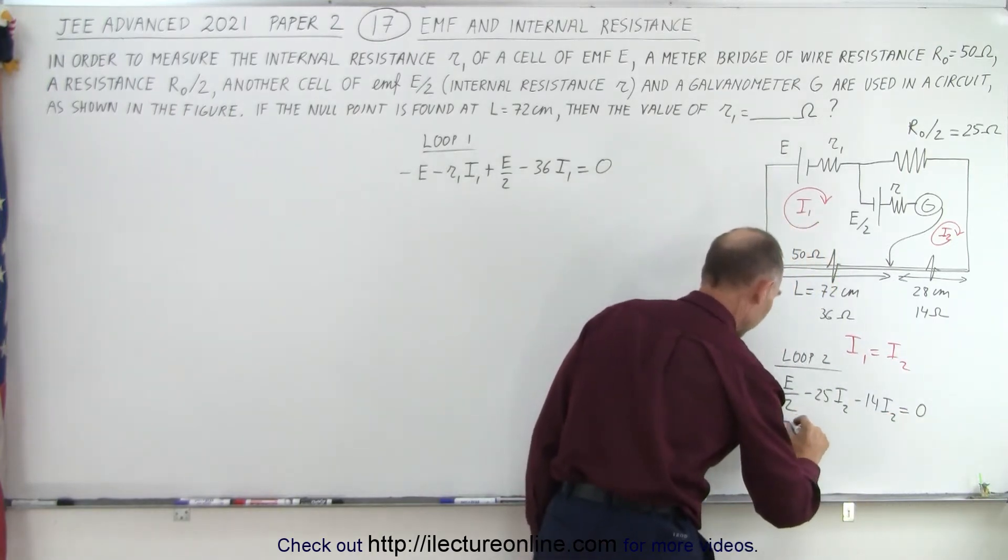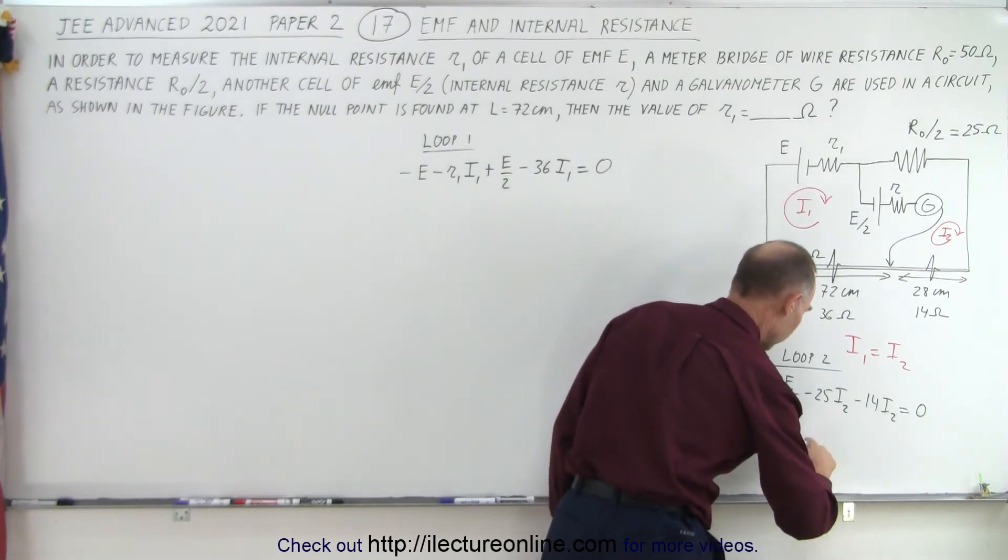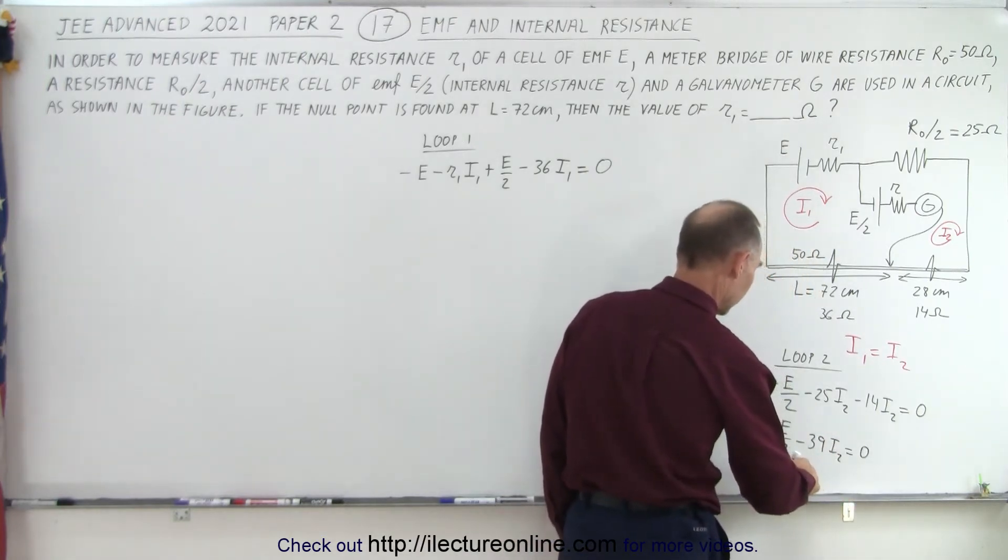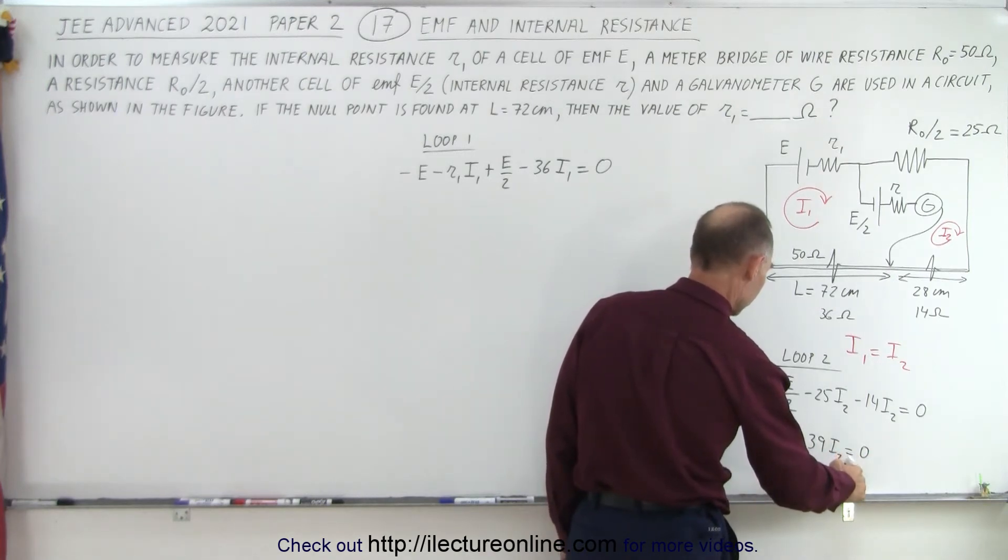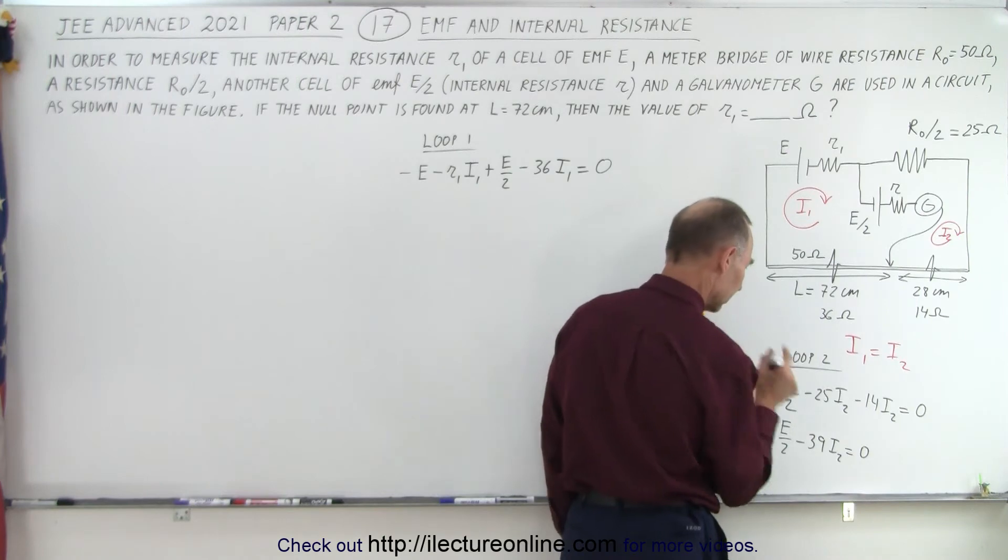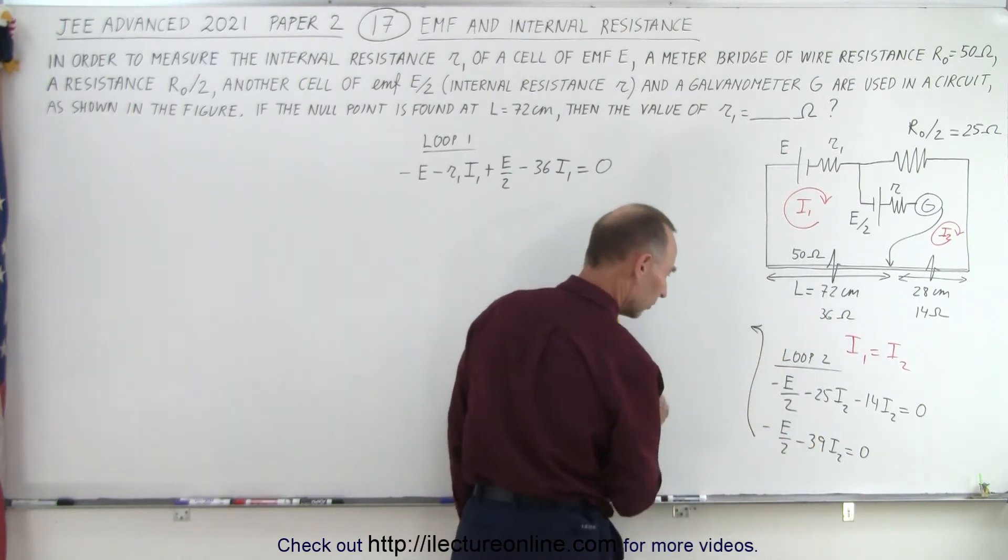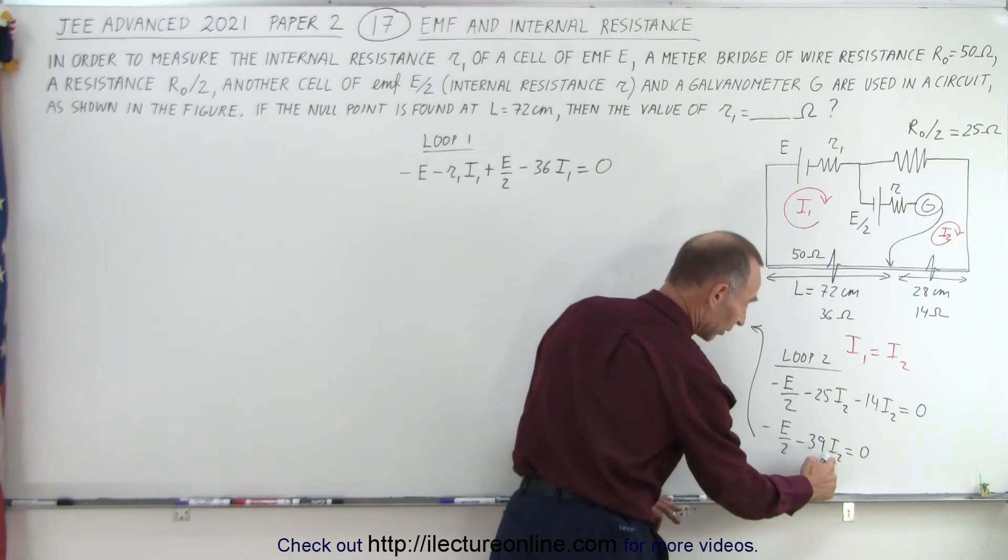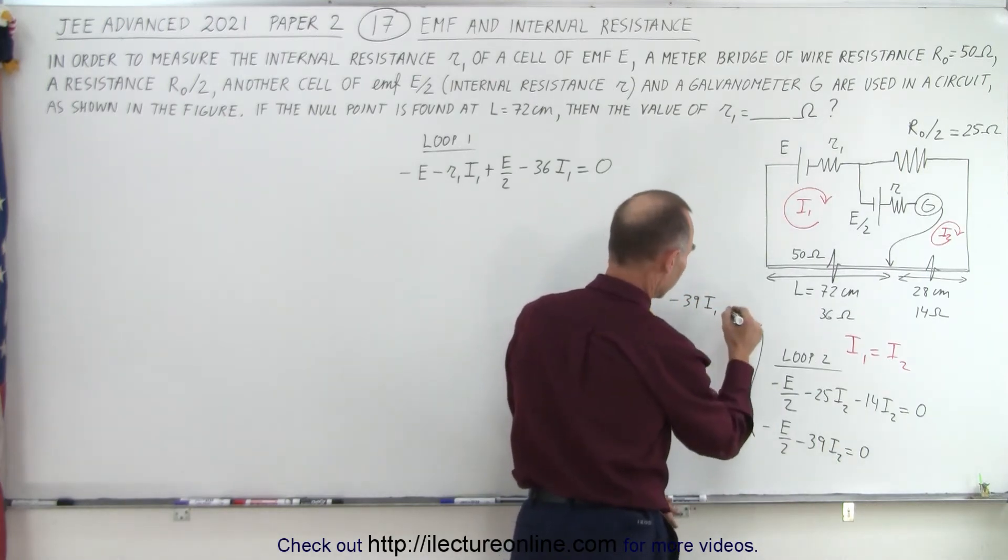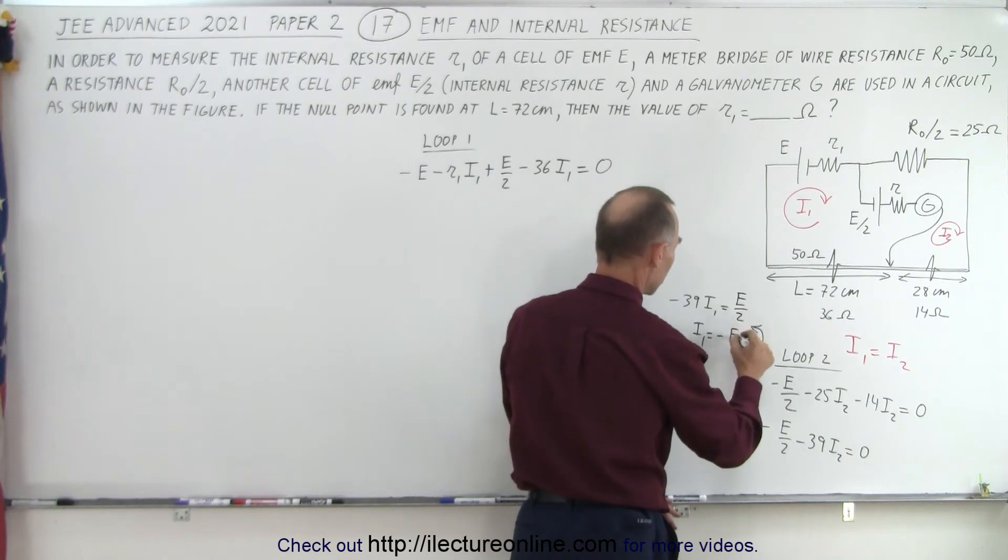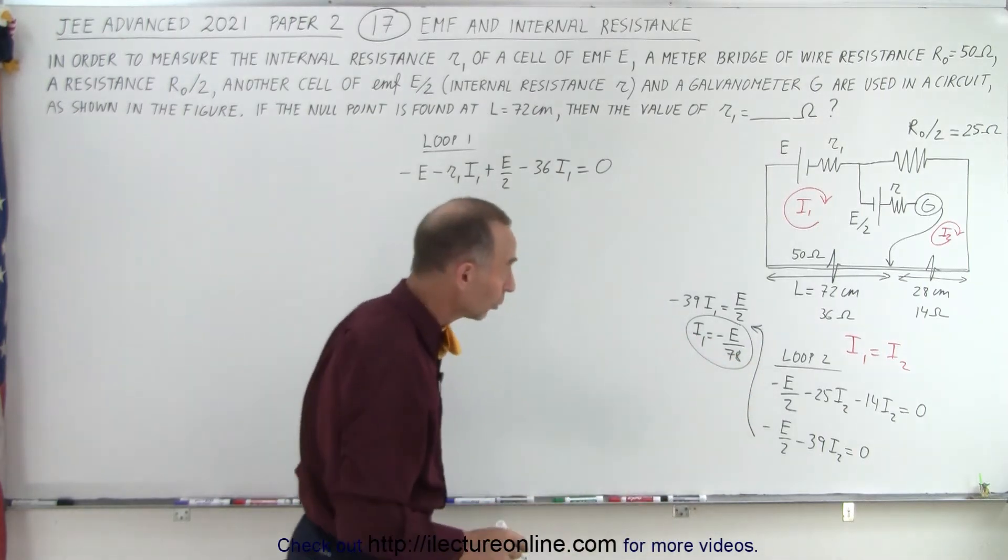Simplifying that, we get minus E/2 minus 39I2 equals zero. From this, we can bring that to the other side. I'm going to write I1 because I1 is equal to I2, so I could replace this by I1. So minus 39I1 equals plus E/2, and therefore I1 equals minus E/78. So there's a relationship between I1 and E from the right loop, from loop 2.